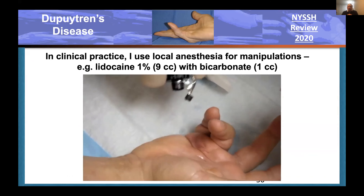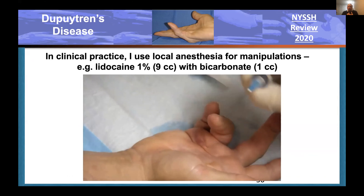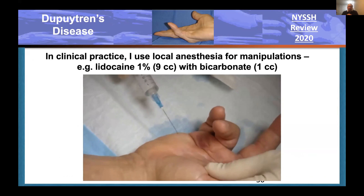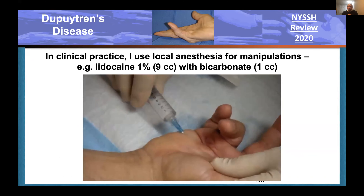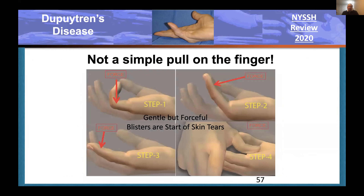For the manipulation, 90% of my cases receive a local block. Occasionally with patients with pacemakers, they're at the ambulatory surgery center where they're monitored and receive some sedation. The manipulation procedure: first flex the PIP and extend the MP, then flex the MP and extend the PIP, extend both joints with the finger extended, push on the cord to break it up, then abduct and adduct the finger to break any natatory ligament cord components.